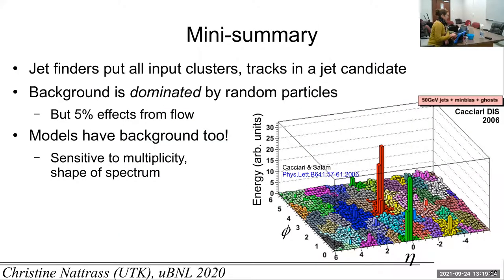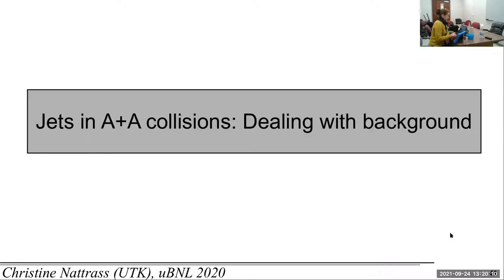The mini summary: jet finders are going to put everything in a jet candidate. And the background is dominated by random particles. Models have background too. This is a picture of what you get when you run your anti-KT jet finder on a heavy ion collision, which has particles everywhere. You get jets everywhere. Whereas if we use our qualitative picture, we're trying to go with and say, well, what is a jet? We'd probably think of these two guys as jets, not necessarily these guys.